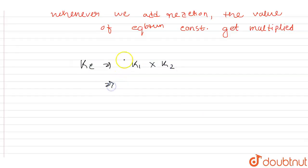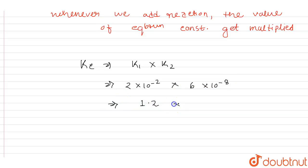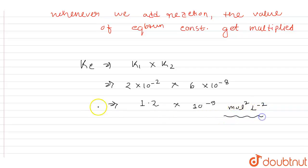The value of K1 is 2×10⁻² and the value of K2 is 6×10⁻⁶. When we multiply these, we get Kc = 1.2×10⁻⁹, with units of mol² per liter squared. This is the equilibrium constant Kc for the resulting reaction.